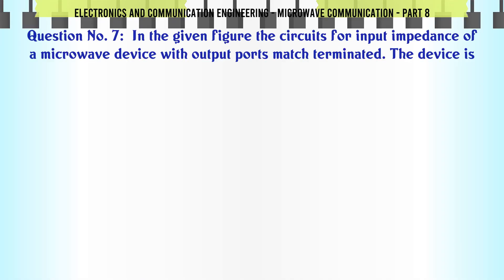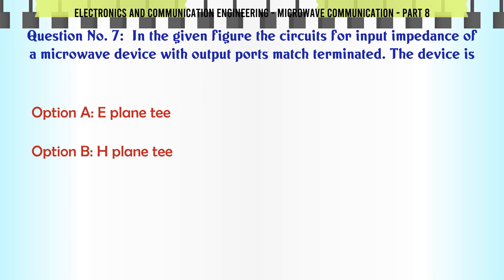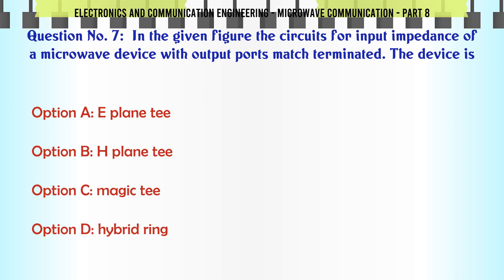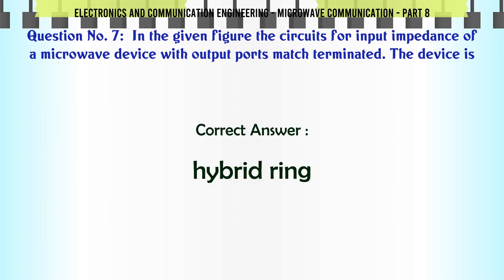In the given figure, the circuit for input impedance of a microwave device with output ports match-terminated — the device is: A. E-plane T, B. H-plane T, C. Magic T, D. Hybrid Ring. The correct answer is Hybrid Ring.